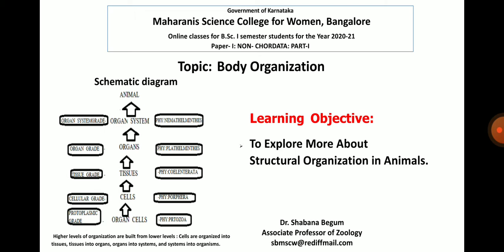The slide gives you information about the different grades or levels or patterns of body organization, which are the protoplasmic grade, cellular grade, tissue grade, then organ grade and organ system grade of body organization with examples. Higher levels of organization are built from lower levels. Cells are organized into tissues, tissues into organs, organs into systems, and systems into organisms.